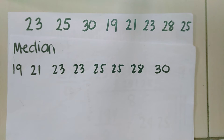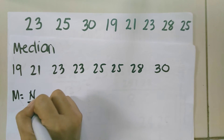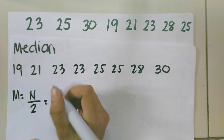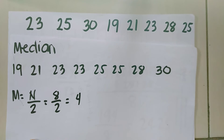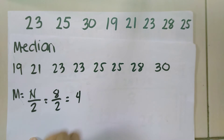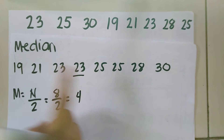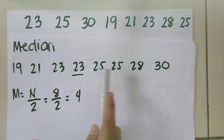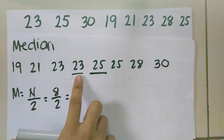There are 2 middle numbers because it is even. If it's odd, there is only 1. But since it's even, we have 2. The formula: median equals n divided by 2. Since our number of data is 8, divided by 2 equals 4. Let's find the 4th position — count 4 from the left and 4 from the right. So we have the 2 middle numbers: 23 and 25.